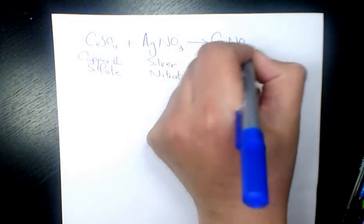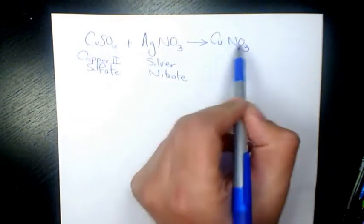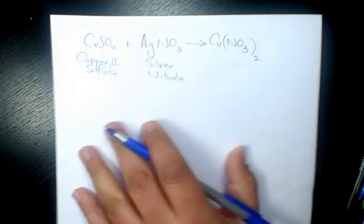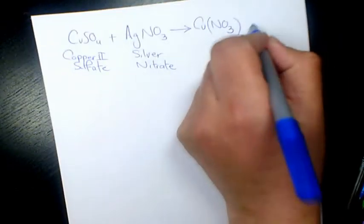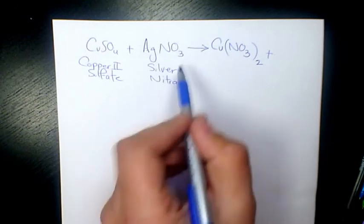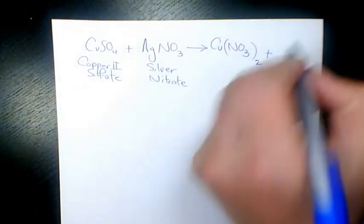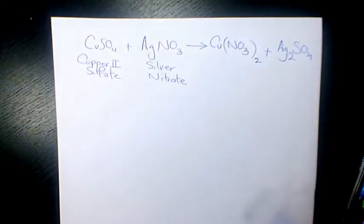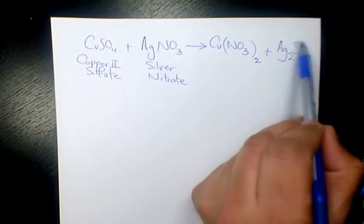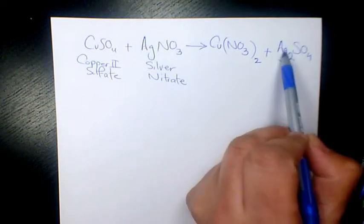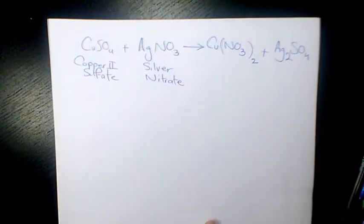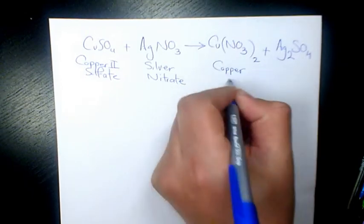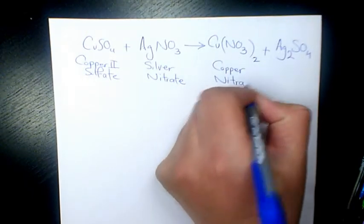Cu(NO3)2. Cu is 2+ and NO3 is 1-, so it's gonna be Cu(NO3)2. Plus we have Ag2SO4. Why? Because sulfate is 2- and Ag is 1+, so we have Ag2SO4. So we have copper nitrate and silver sulfate.